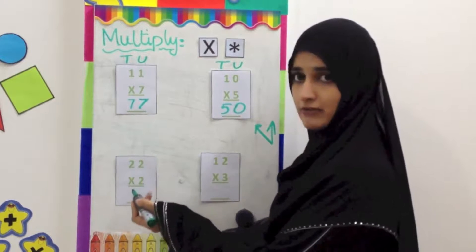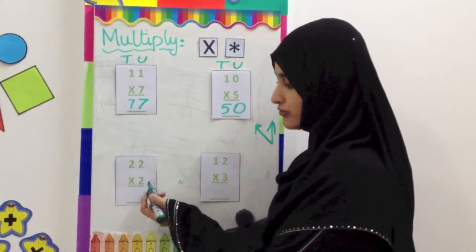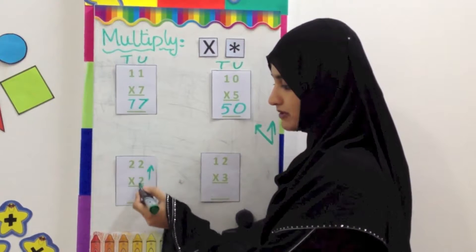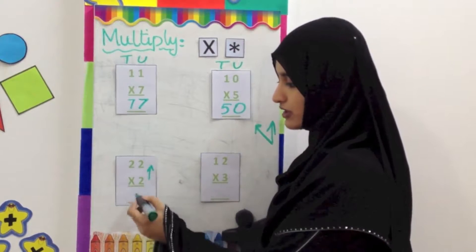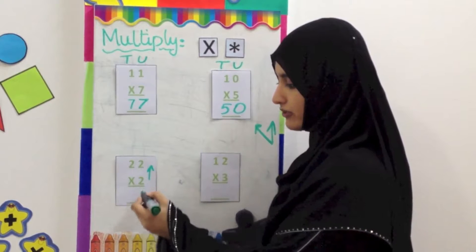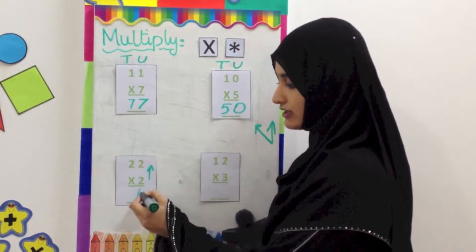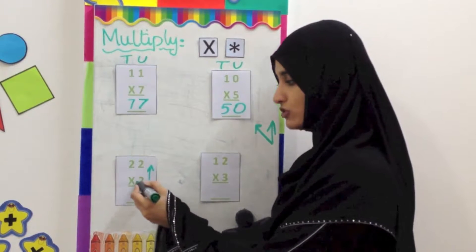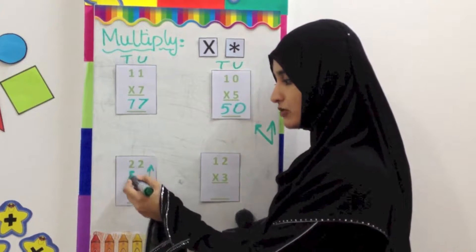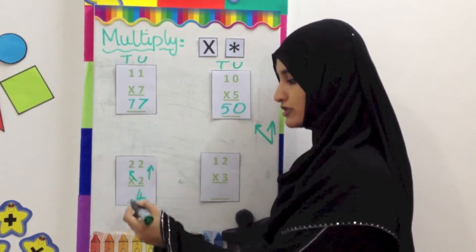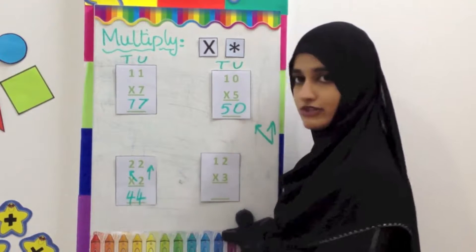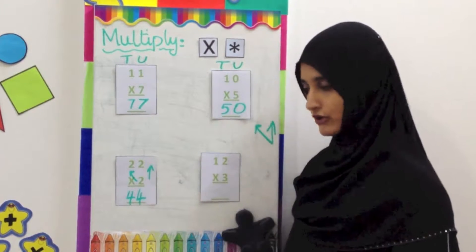22 multiplied by 2. The first thing you do is multiply up. 2 twos are 4 — write that down in the units place. Then you are going to multiply 2 with this number over here. 2 twos are 4 again. The answer is 44.